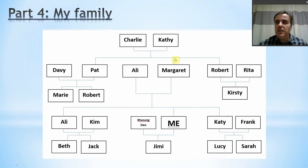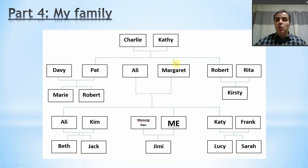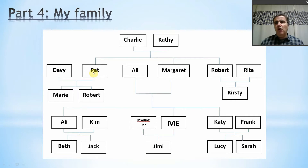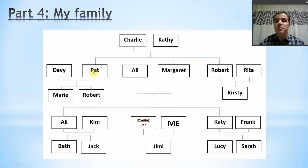We can also see more people here. If we take my mum, here are my mum's parents, Charlie and Kathy — they're my grandparents, my mum's parents. We can also see one of my mum's brothers here, Robert, and one of her sisters here, Pat. By drawing this family tree, we can really see the different relationships in anybody's family.